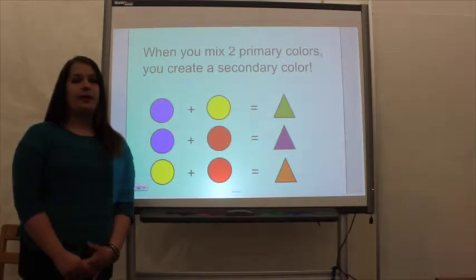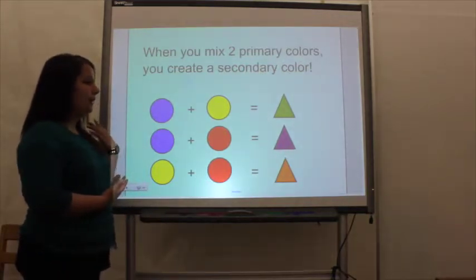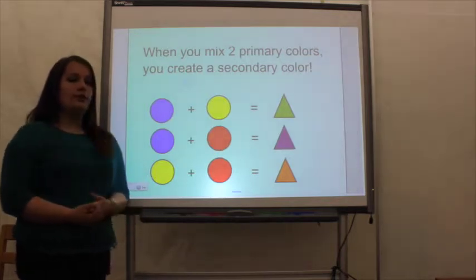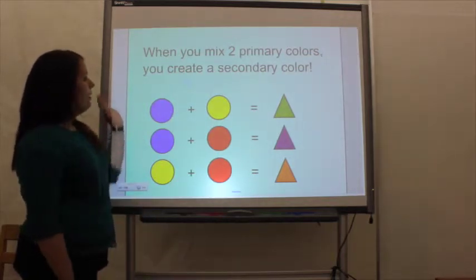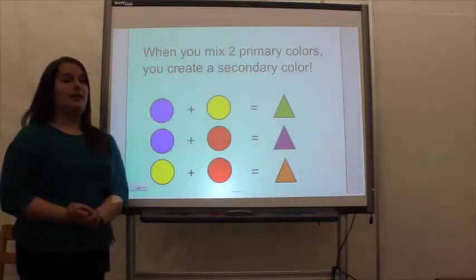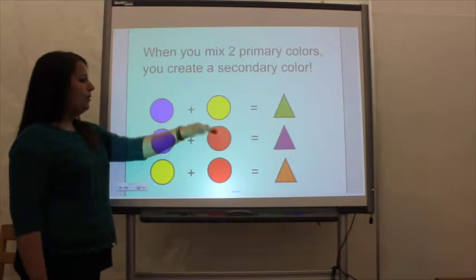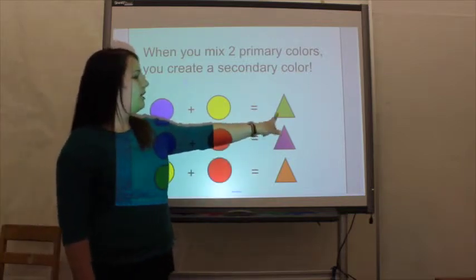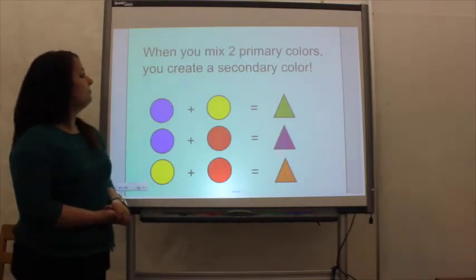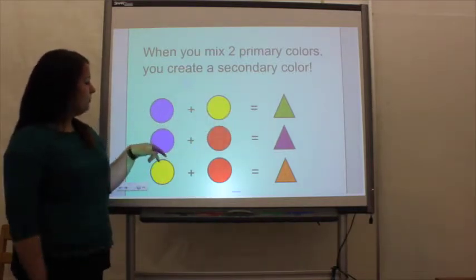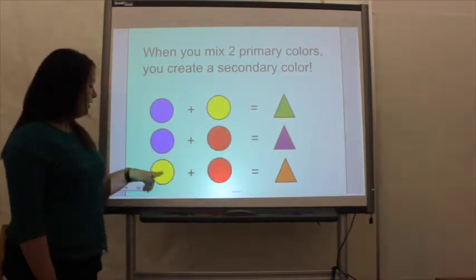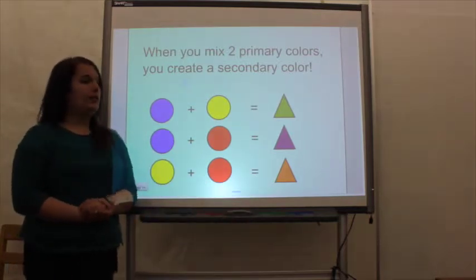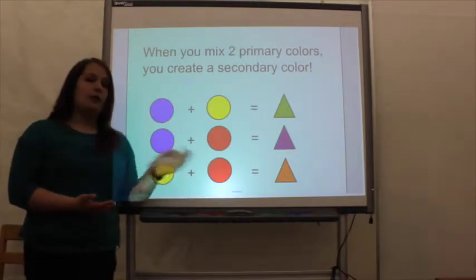First grade students should be learning about basic addition, so I'm including colors with addition so they can view the information visually as well as mathematically — this helps connect to different learners. When you mix two primary colors, you create one secondary color. All primary colors are in circle shapes, and all secondary colors are in triangles. So blue plus yellow equals green, blue plus red equals purple, and yellow plus red equals orange. Students can make associations based on shapes, colors, and the mathematical point of view.